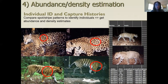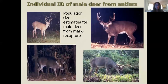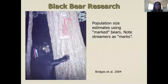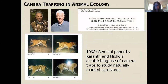I also focus on abundance and density estimation for various projects, including a long-term jaguar project. Individual identification works not just on spotted cats, but also on deer using antler patterns, and on bears using ear streamers. The seminal paper by Karanth and Nichols in the late 1990s first estimated tiger population size using remote cameras identifying individuals by stripe patterns — we applied this approach to jaguars and ocelots.